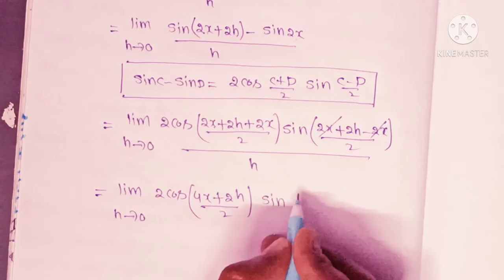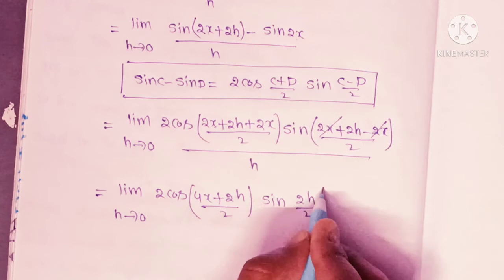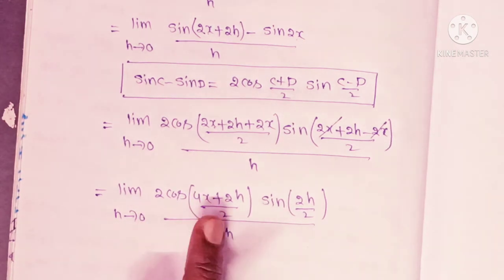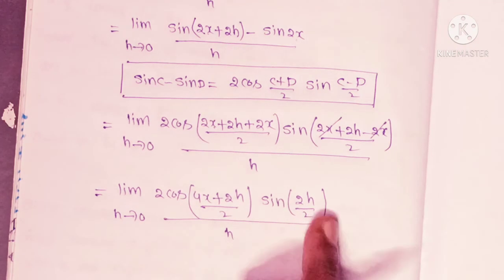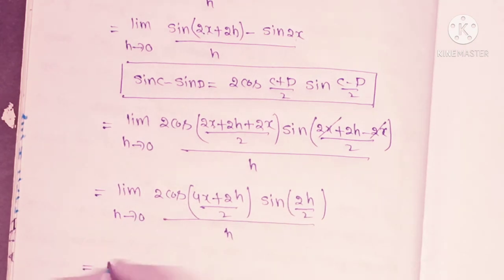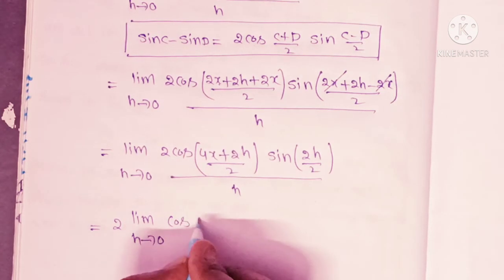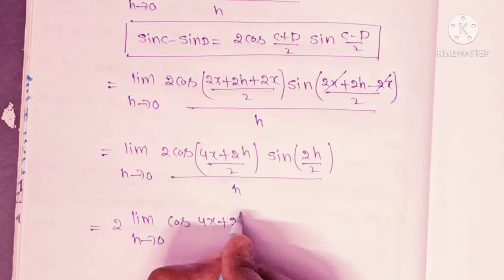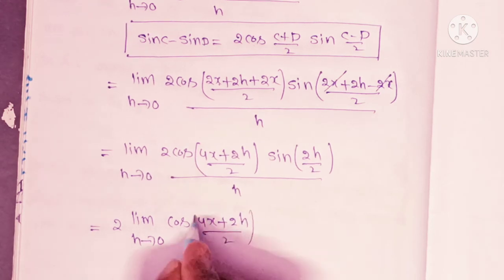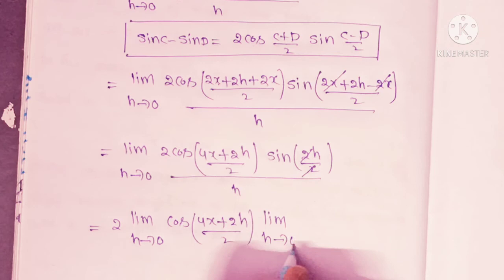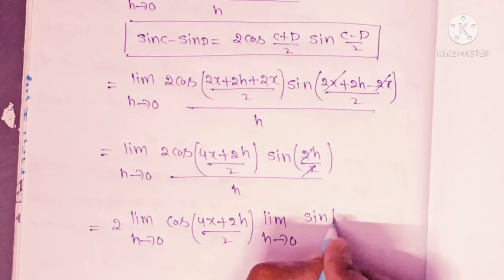The 2x terms cancel in the sine argument, leaving sin(2h by 2), which is sin(h). So the expression is: limit h tends to 0 of 2 cos((4x plus 2h) by 2) into sin(h), divided by h. Since 2 is a constant, this becomes 2 into limit h tends to 0 of cos((4x plus 2h) by 2) into limit h tends to 0 of sin(h) by h.